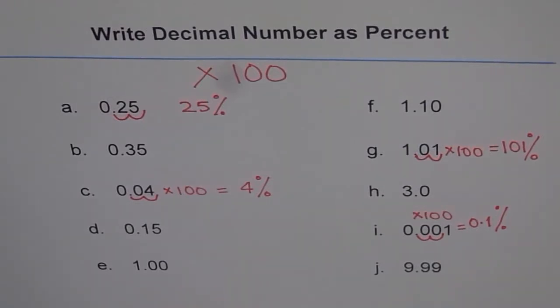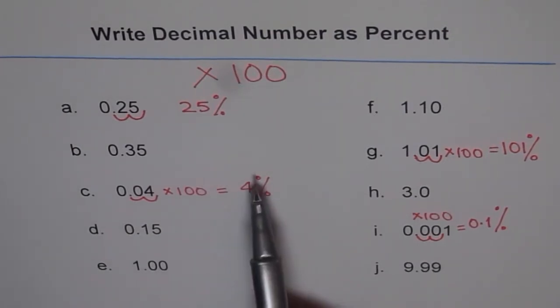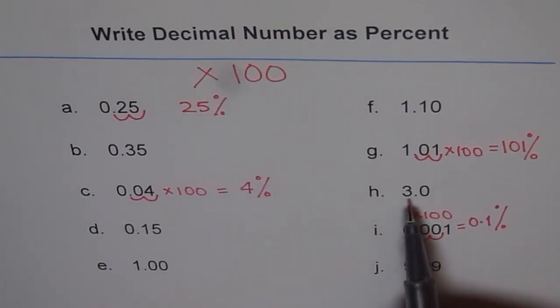That's the simplest thing—times by 100 is moving the decimal two places and making a bigger number, writing it with a percent sign. This will be how much?